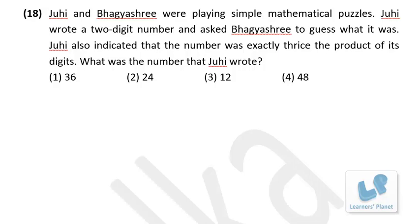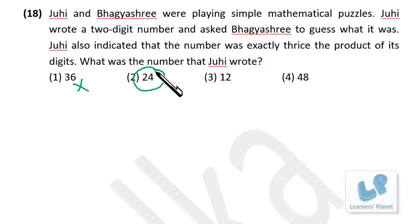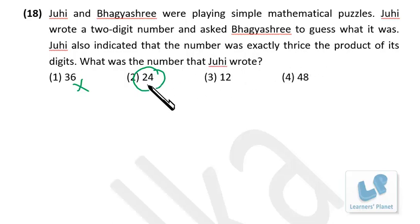Juhi wrote a two-digit number and asked Bhagyashree to guess it. The number is exactly thrice the product of its digits. Working backwards: 4 × 2 = 8; 8 × 3 = 24. The product of digits of 24 is 4 × 2 = 8, and 8 × 3 = 24 — correct. The number is 24.